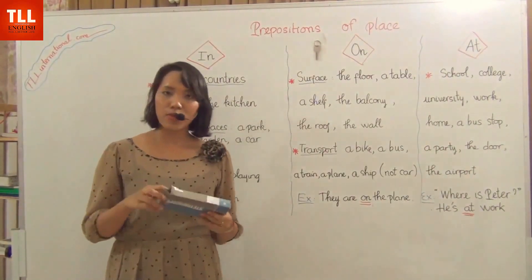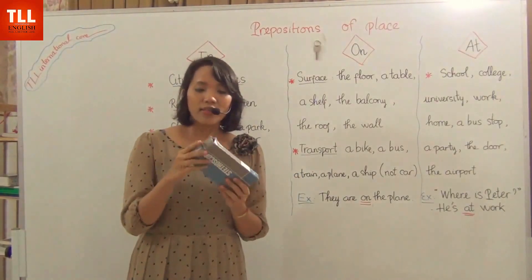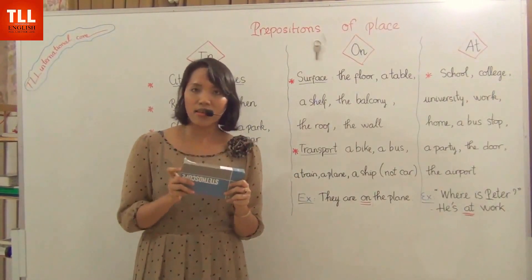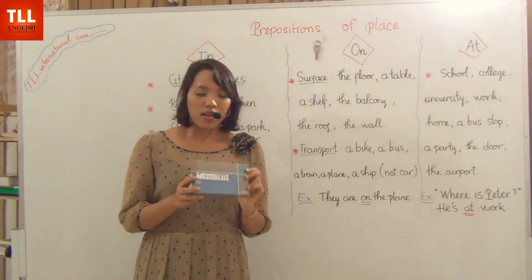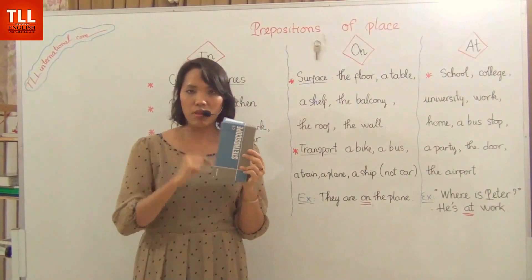For closed spaces I have one more example for you. I will put one marker pen in the box here. When my friend asks, do you see my marker pen, where is it? I will say it's in the box. The box is a closed space, so we have to use preposition IN.